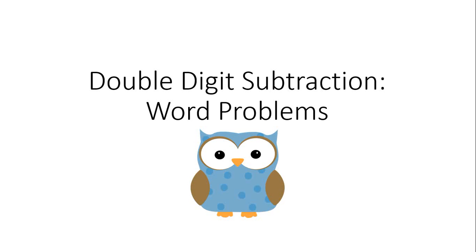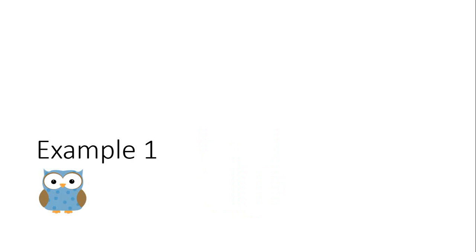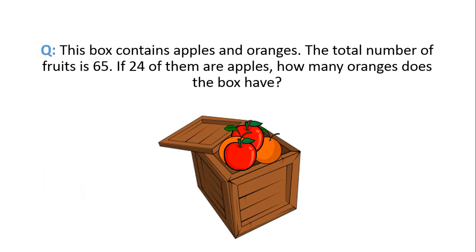Double Digit Subtraction Word Problems. Example 1: This box contains apples and oranges. The total number of fruits is 65. If 24 of them are apples, how many oranges does the box have?